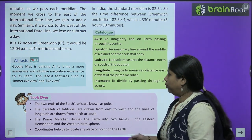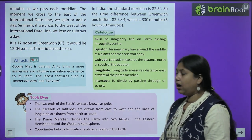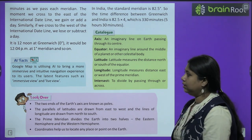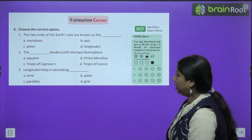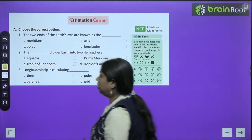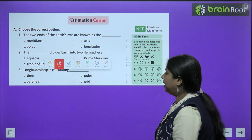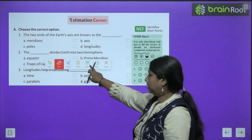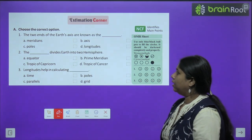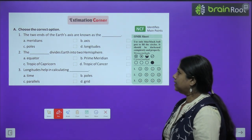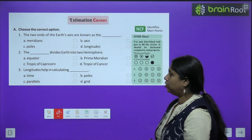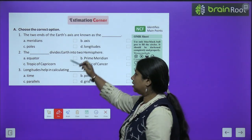We are done with the chapter. Now we will move towards the exercises. Let's get started with exercise one — choose the correct options. Multiple choice questions diye hue hain. The two ends of Earth's axis are known as: meridians, poles, axis, or longitude? Answer is: poles.